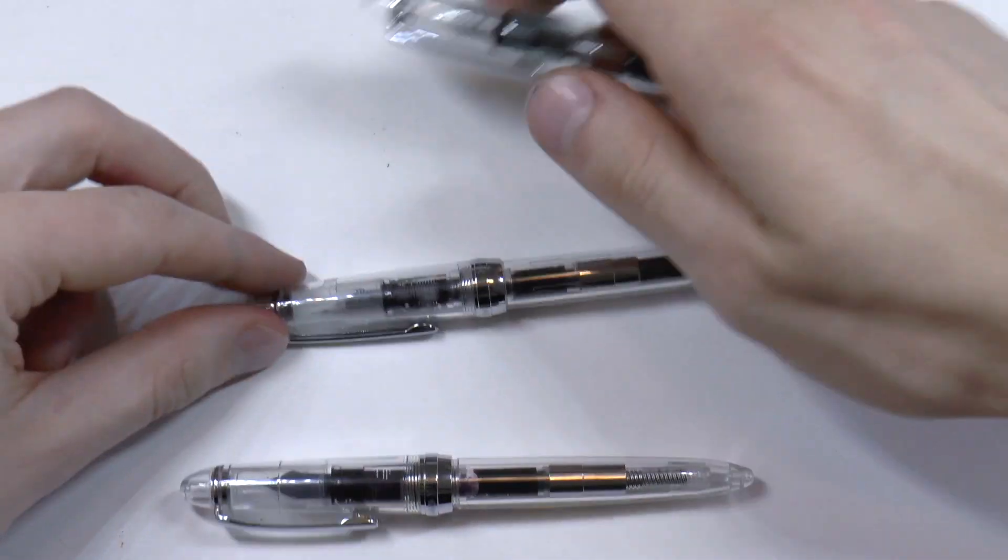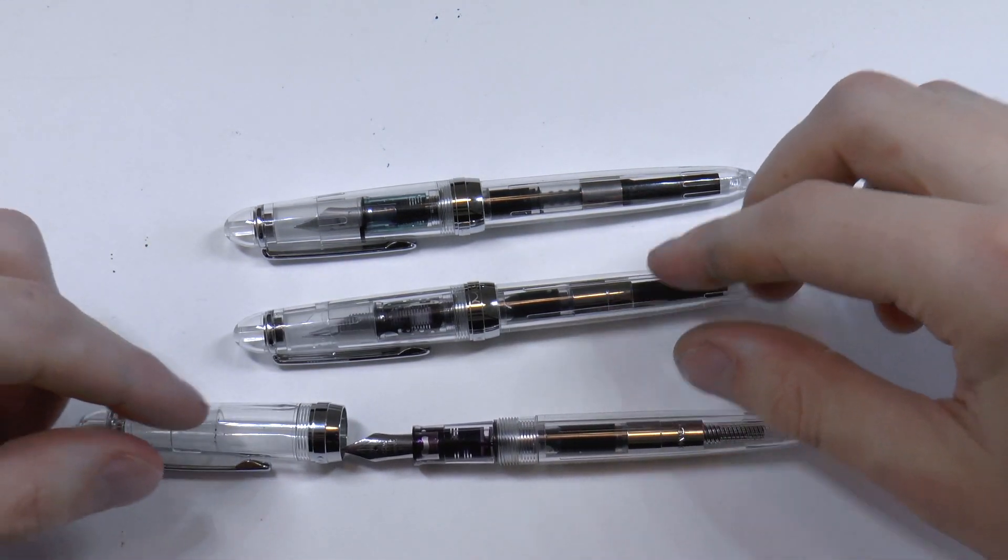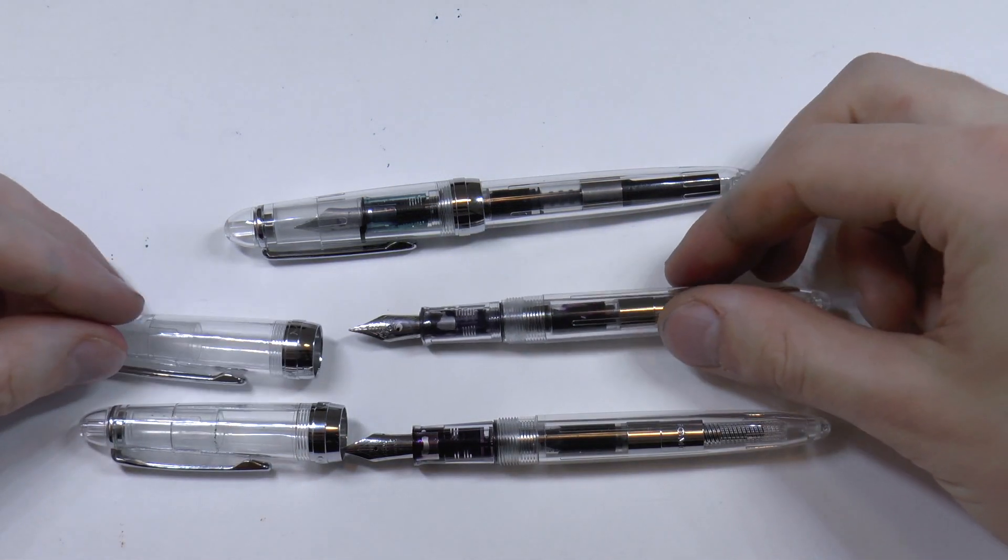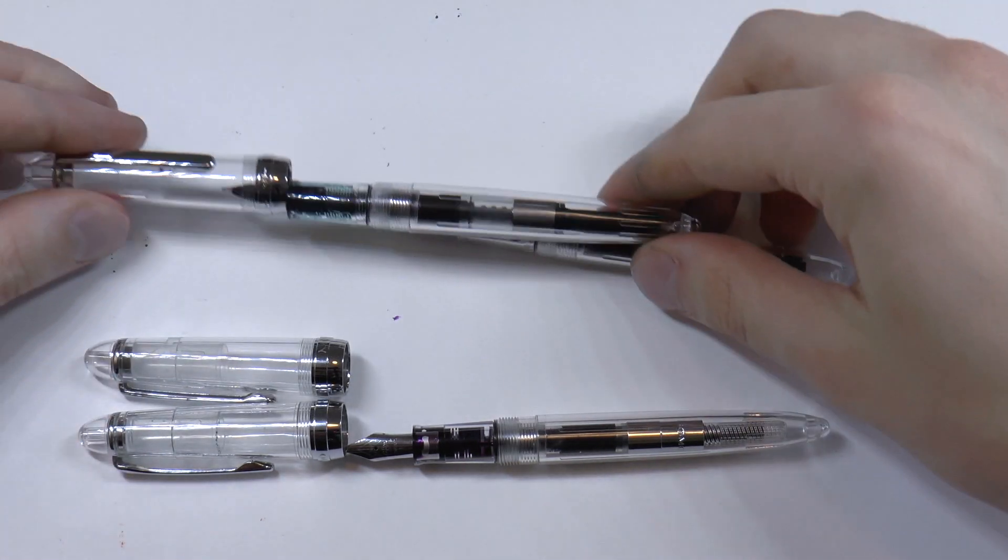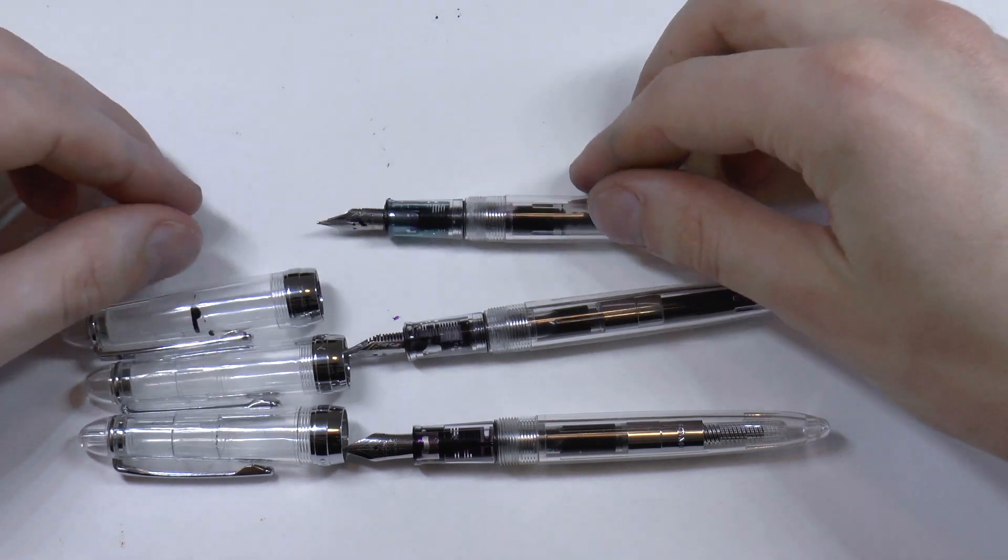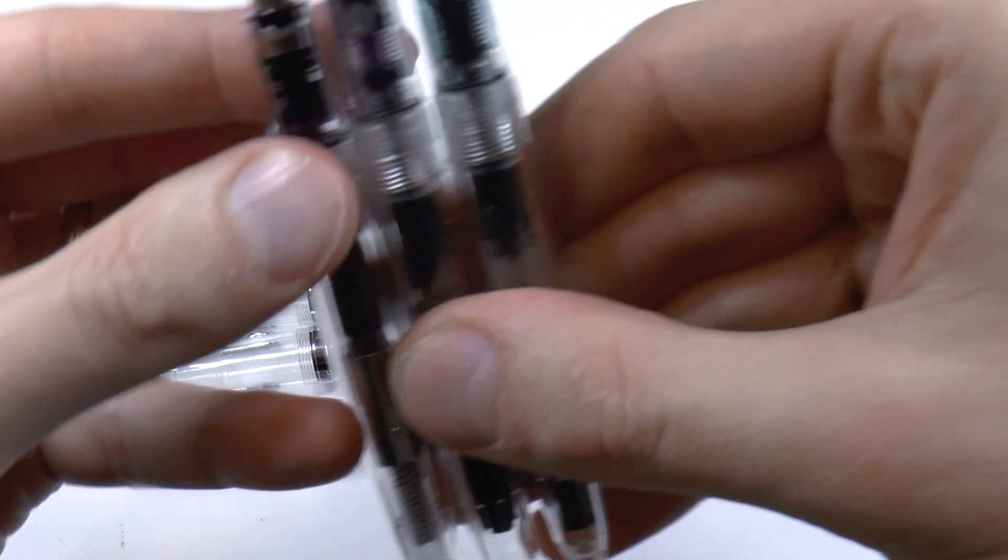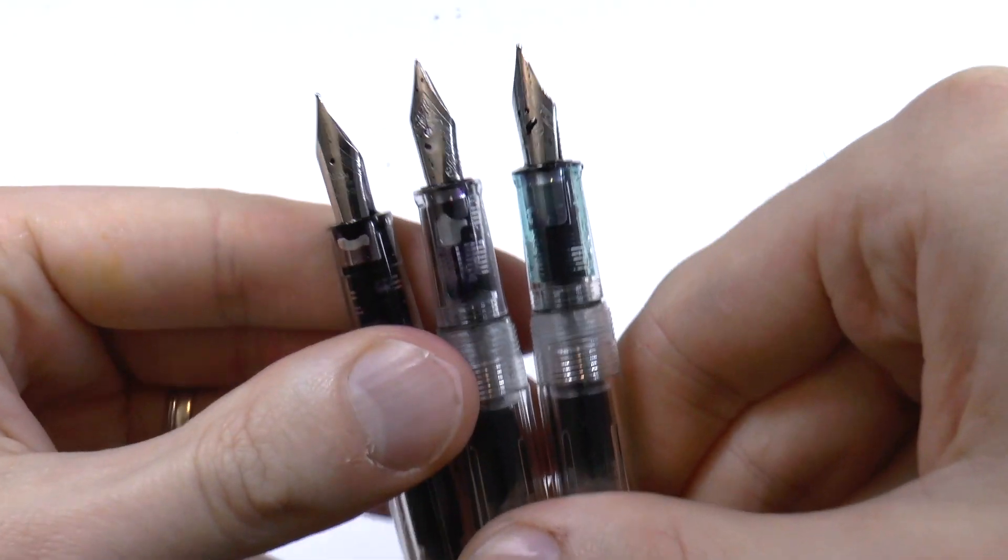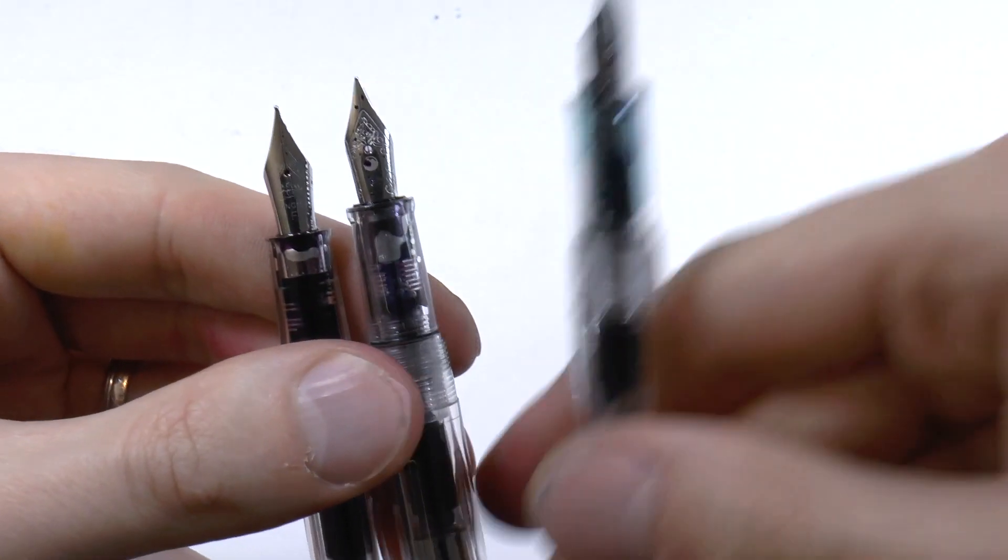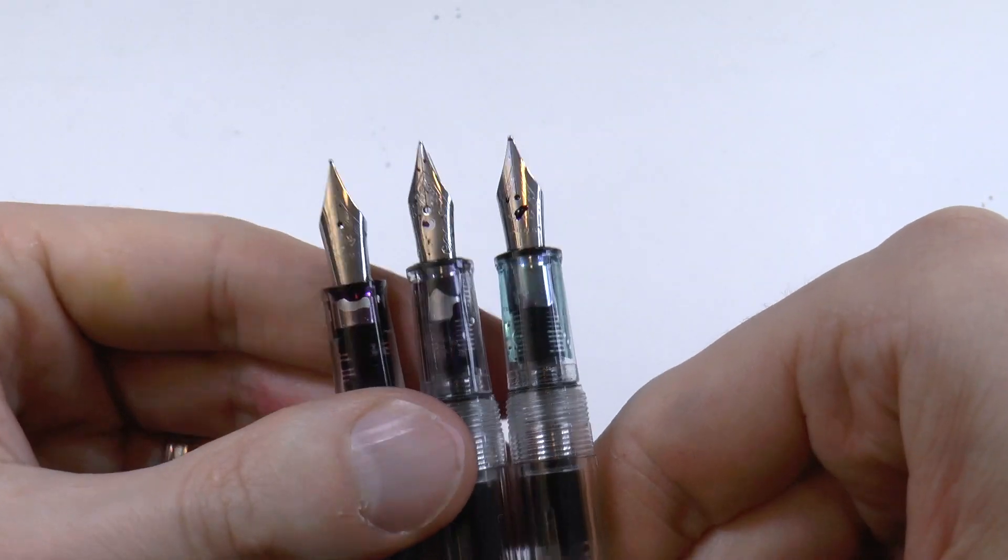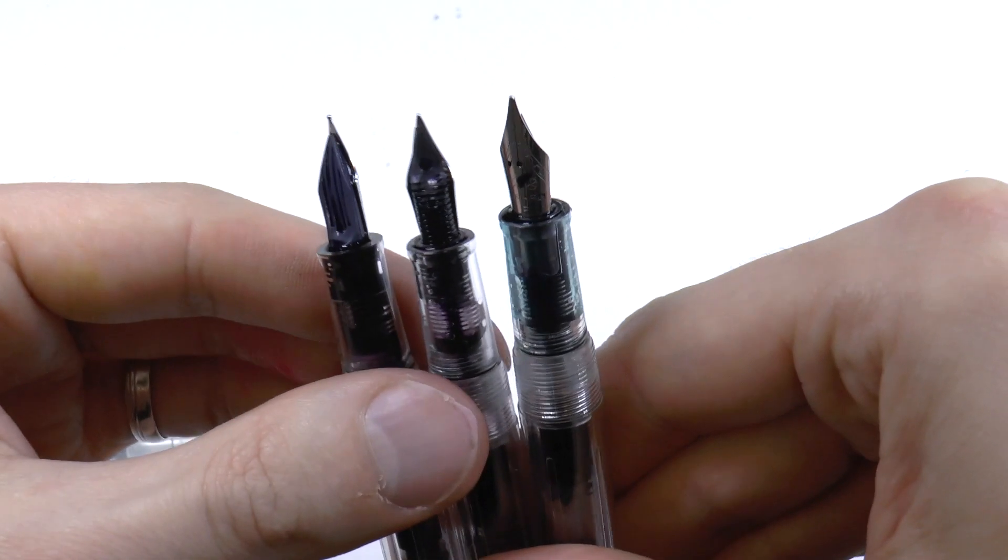Let's talk about some other differences. One important difference - let me make sure I get the caps right here. So here you have the Lingmo, the Monza, and the Jinhao 992. Different nibs, so from left to right: Lingmo Lorelei, the Monteverde Monza, and then the Jinhao 992. They are different nibs and the feeds are different as well.